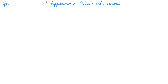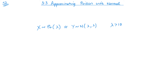So if the random variable X is distributed as Poisson with parameter lambda, this is going to be approximately — we change to Y for our random variable — a normal distribution where the mean and variance are both lambda. If you remember back to the definition surrounding Poisson, you know that its mean and variance are equal. So this is the approximation we would use, and lambda should be a value greater than 10.